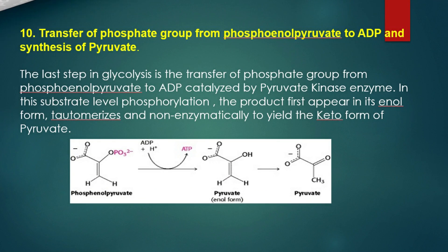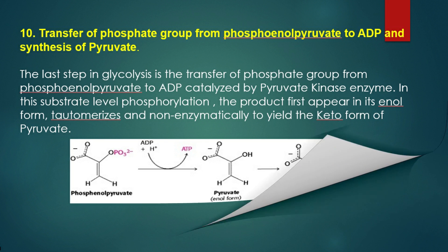The tenth and last reaction of glycolysis is the transfer of the phosphate group from phosphoenolpyruvate to ADP. This reaction is catalyzed by pyruvate kinase enzyme. In this substrate-level phosphorylation, the product pyruvate first appears in its enol form and after that converts to its tautomeric keto form. In this overall process, one molecule of glucose is converted into two molecules of pyruvate and two molecules of ATP. Thank you.